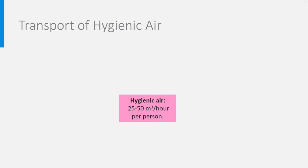Let's start with the transport of hygienic air. Hygienic air is the quantity of clean outdoor air that is needed to maintain a good indoor air quality. A minimum of 25 cubic meters per hour per person is needed, and higher values are recommended between 36 and 50 cubic meters per hour per person. It is very important that this clean air is brought directly where people need it, which is in the building's rooms. Ventilation systems can be divided into four types.